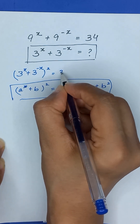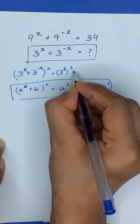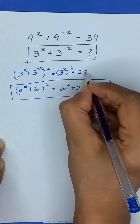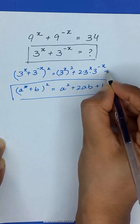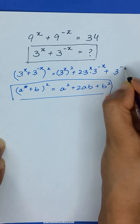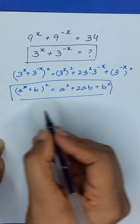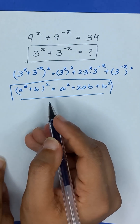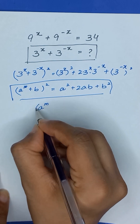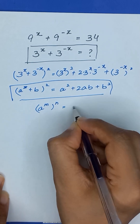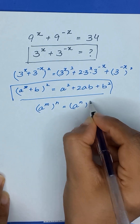So it will become 3^x squared plus 2 times 3 to the power x times 3 to the power minus x plus 3 to the power minus x squared. We also know that a to the power m, whole power n, is equal to a to the power n, whole power m.